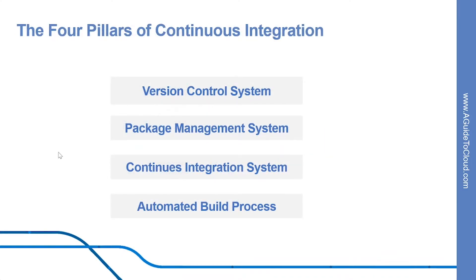Now let us look into the four pillars of continuous integration. This continuous integration relies on four key elements for successful implementation: a version control system, a package management system, a continuous integration system, and an automated build process.